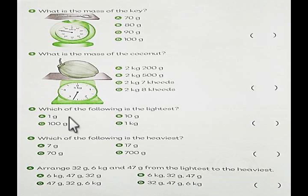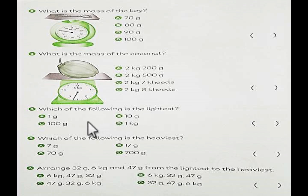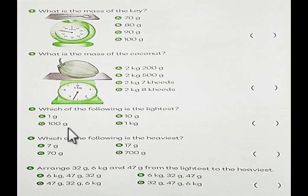Number 4. Which of the following is the lightest? A: 1 gram. B: 10 grams. C: 100 grams. D: 1 kilogram. Choose A, B, C, or D.